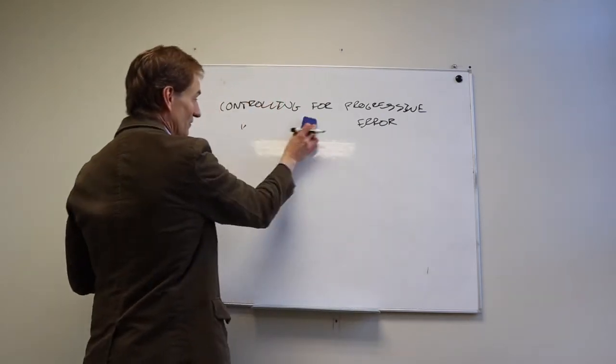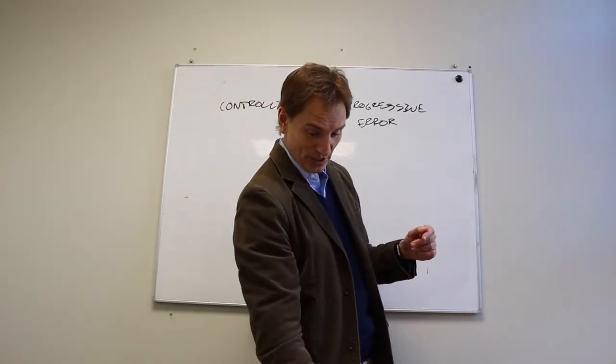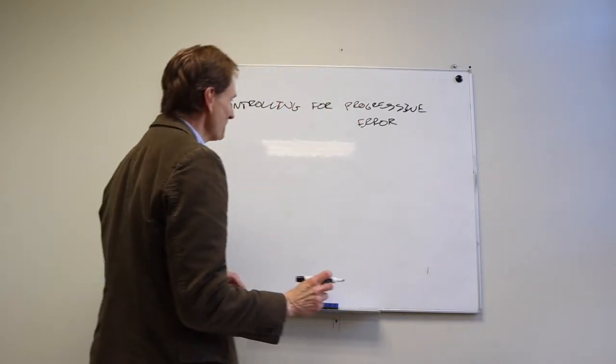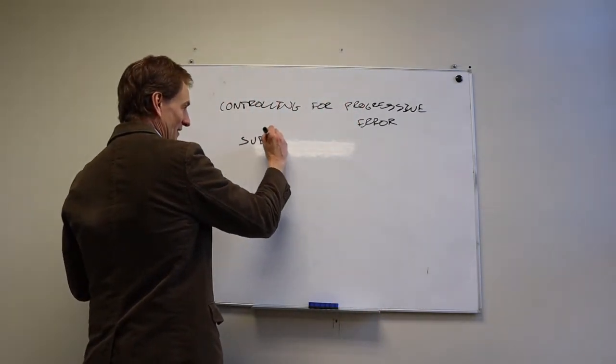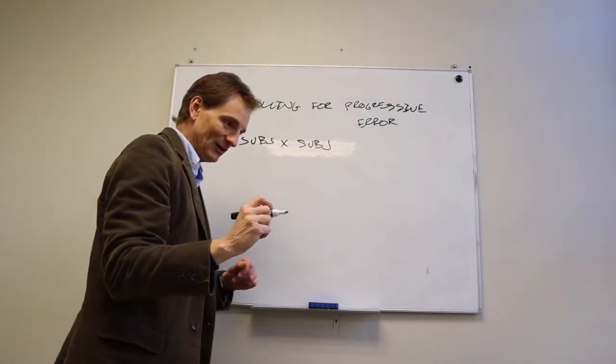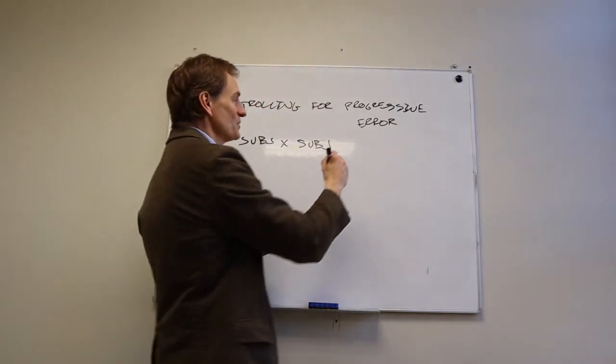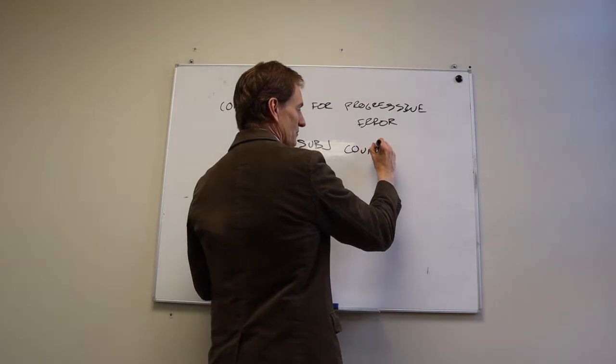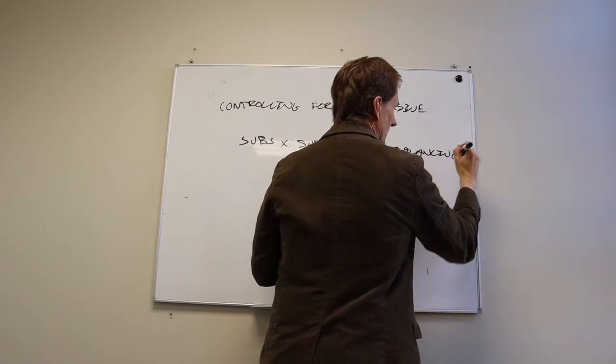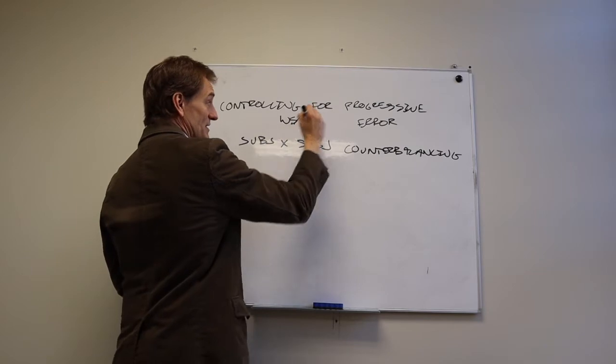We do what's called counterbalancing. And there's three different types of counterbalancing that we do. The first is called subject by subject counterbalancing. I've never actually seen it in the real world, but I talk about it because a lot of textbooks talk about it. Let me reiterate, this is just for within subjects, within groups designs.